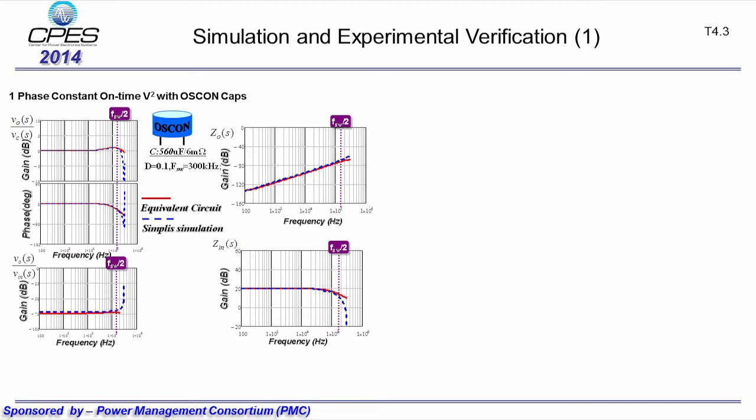This shows simulation verification for OSCON capacitors. The control-to-output voltage, audio susceptibility, output impedance, and input impedance are compared. We can see that the proposed equivalent circuit model agrees with simulation results very well up to half of switching frequency for all four transfer functions.